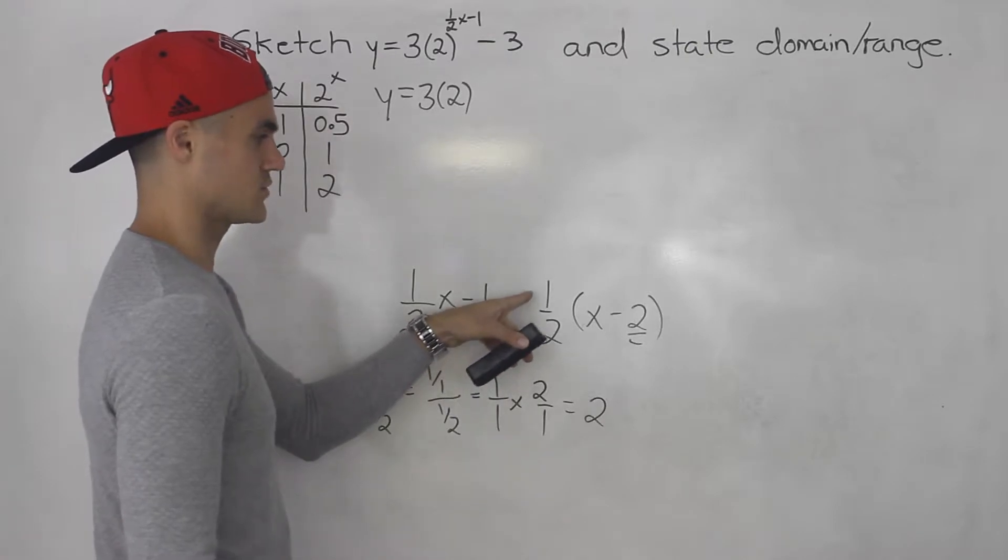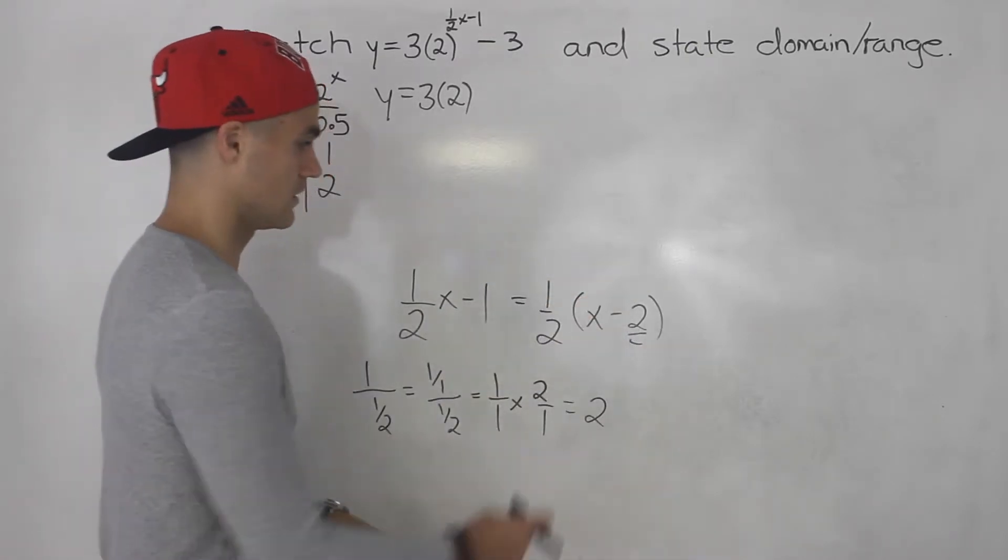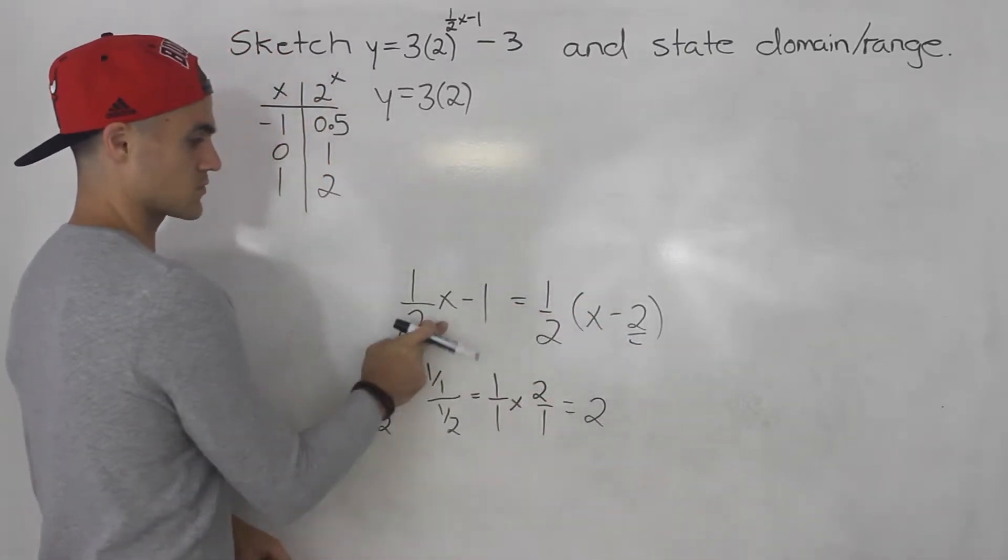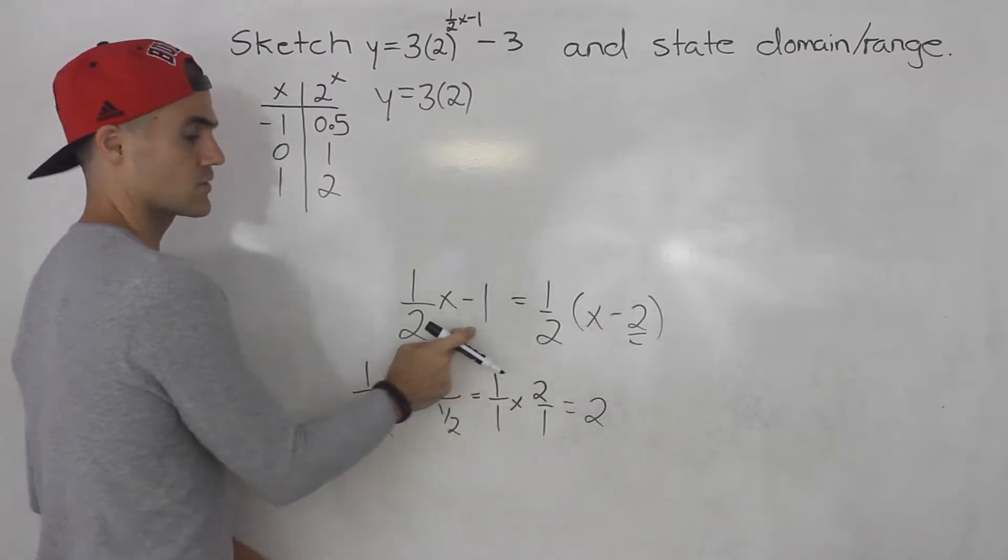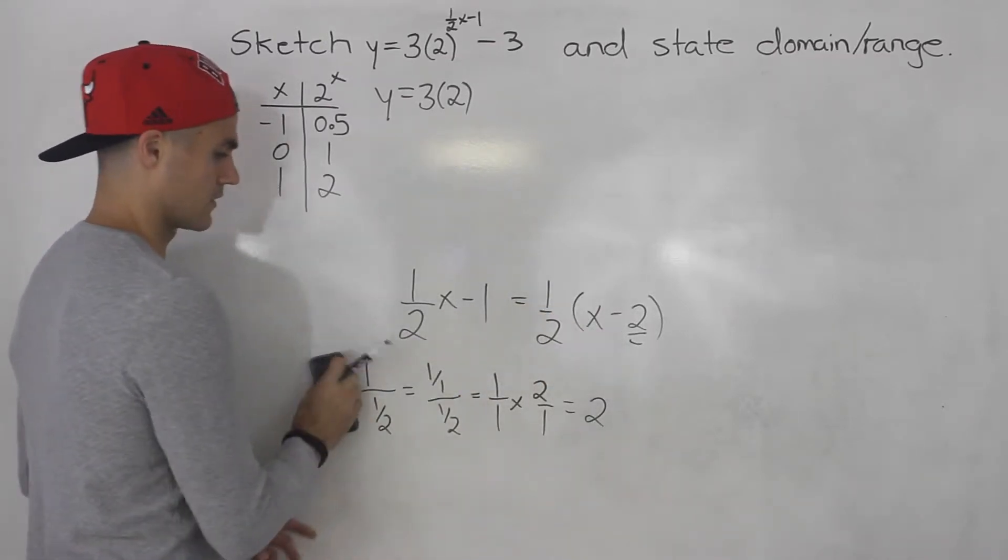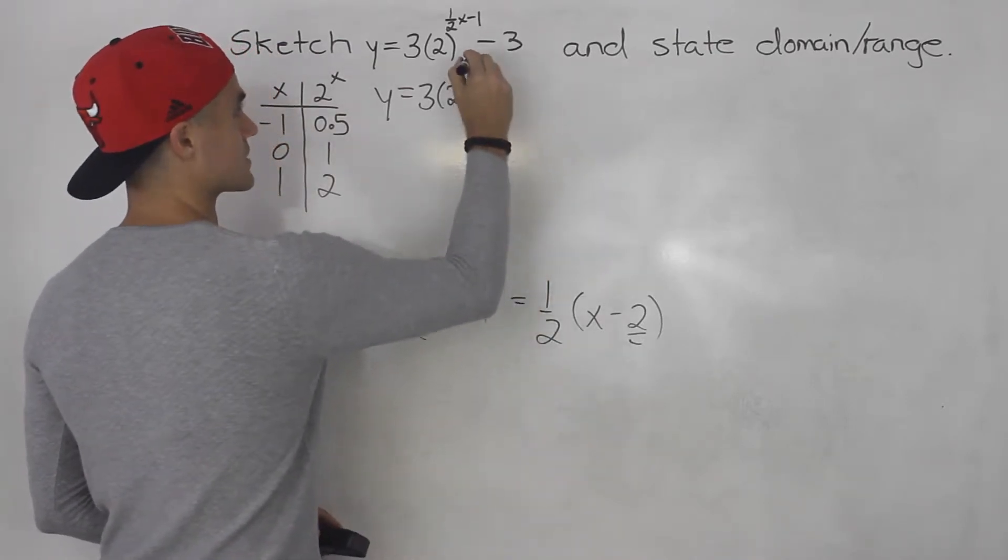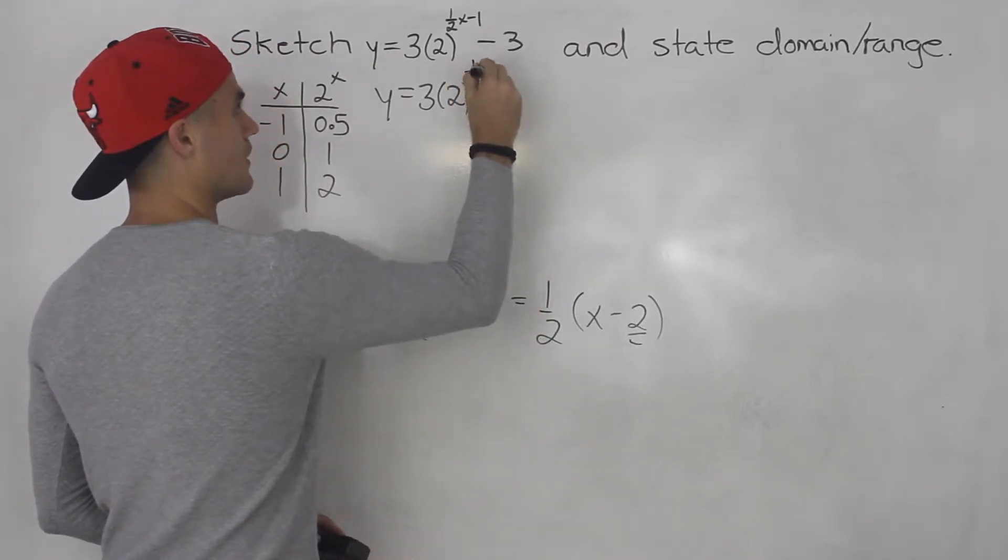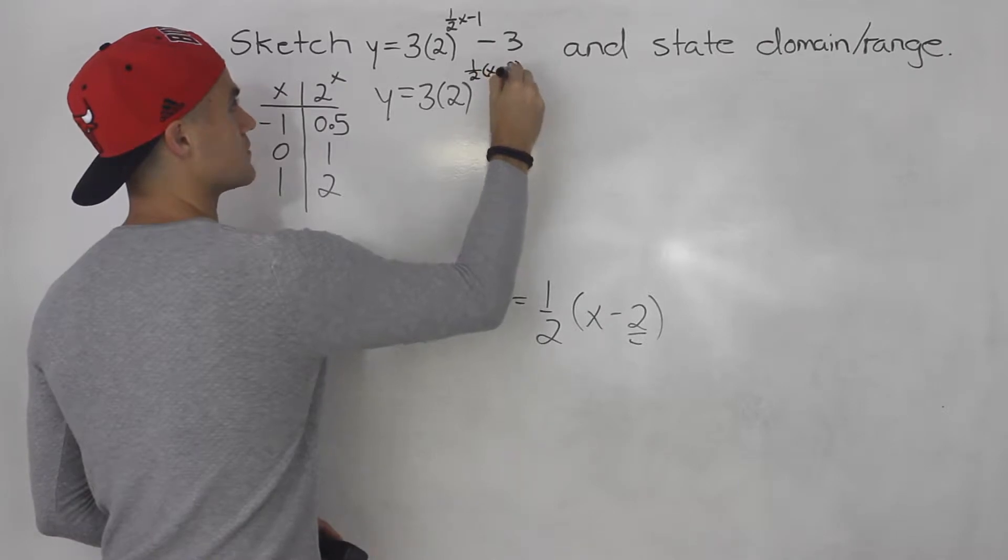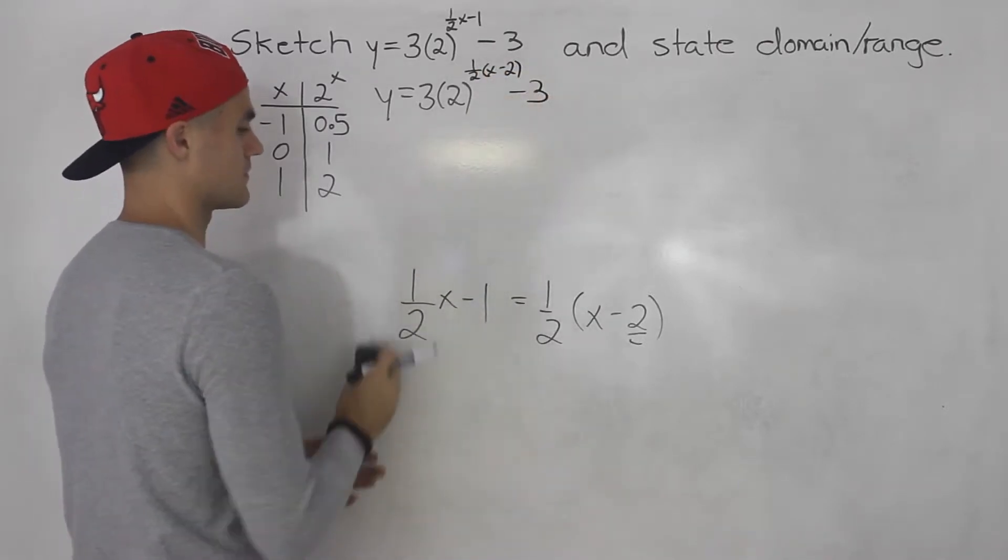And then you can check your answer too. If you distribute this in the bracket, 1 half times x is 1 half x. 1 half times negative 2 is negative 1. So this goes in the exponent. So we'll have 1 half x minus 2 minus 3.